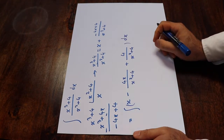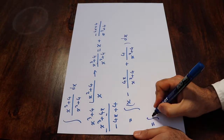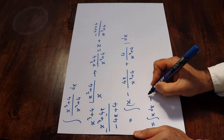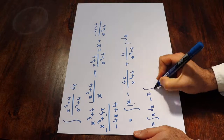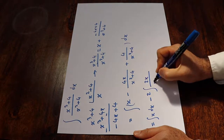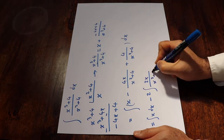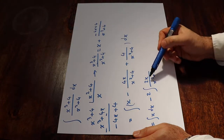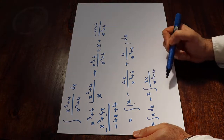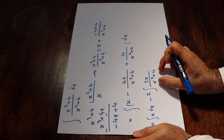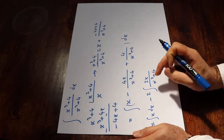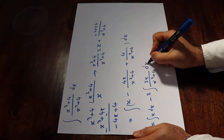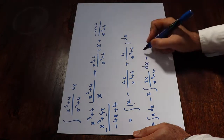You can write this as the integral of x dx, minus 2 times the integral of 2x over x² plus 4. Instead of 4x I wrote 2 times 2x, because the derivative of the denominator is 2x, which makes the integral straightforward. Then dx, plus the last term.